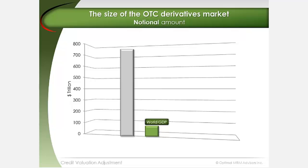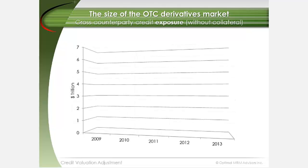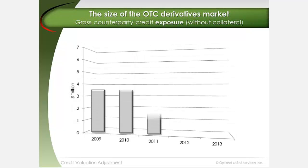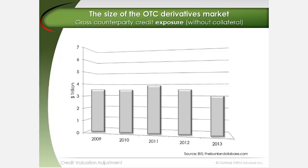This comparison is somewhat exaggerated, however, because unlike straight debt, it is the fair or market value of these transactions that is at risk of credit default. As an indication of counterparty credit exposure, the netted market value excluding collateral posted between counterparties averaged $3.5 trillion from 2009 to 2013.